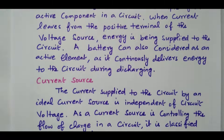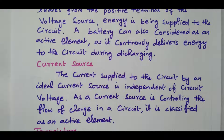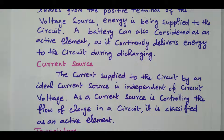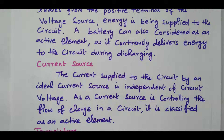Similarly, the current source. The current supplied to the circuit by an ideal current source is independent of the circuit voltage. So the current source controls the flow of charge in the circuit, and is therefore classified as an active element. The current source is able to supply current to the circuit continuously, independently of circuit voltage — that is why it is called an active element.